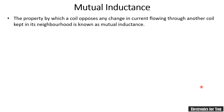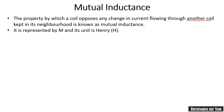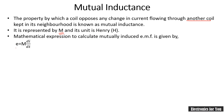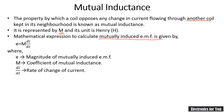Mutual inductance is the property by which a coil opposes any change in the current flowing through another coil kept in its neighborhood. It is represented by capital letter M and its unit is also Henry. The mathematical expression for mutually induced EMF is given by E equals M times di/dt, where E is the magnitude of mutually induced EMF, M is the coefficient of mutual inductance, and di/dt is the rate of change of current. That's all for the day, thank you.